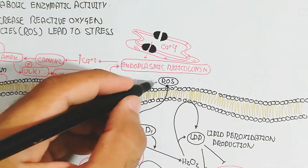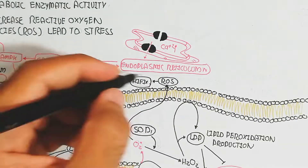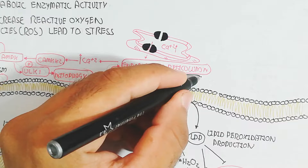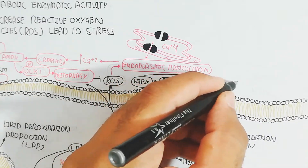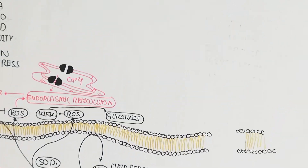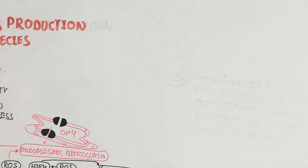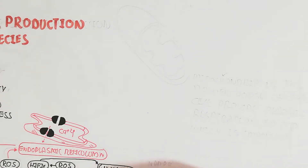Mitophagy functions to inhibit reactive oxygen species. Additionally, reactive oxygen species trigger HIF, which stimulates more glycolysis — because glycolysis becomes very important when mitochondria are not working correctly.